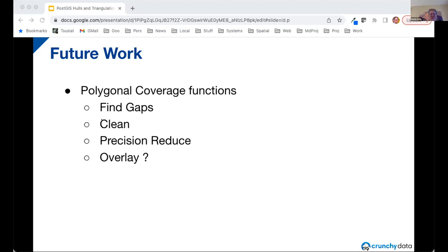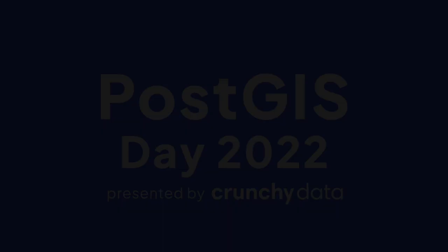That's the end of my talk — are there any questions? We have one question from David Bitner: does ST_CoverageValidate deal with slivers where there's a gap along a section of shared boundary? The version I presented doesn't, but there is another extension where you can provide a sliver tolerance or a distance tolerance and it will find boundary slivers — so qualified yes to that question.